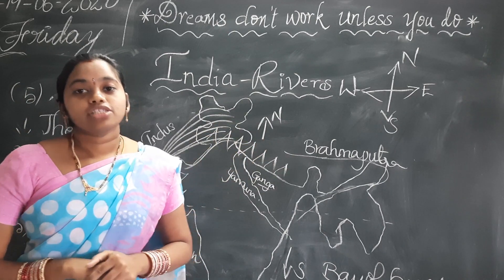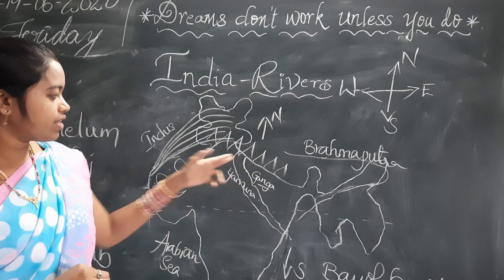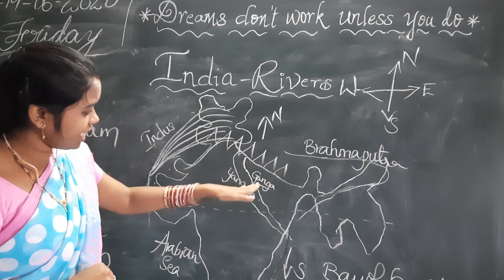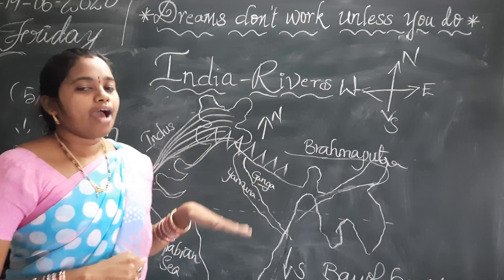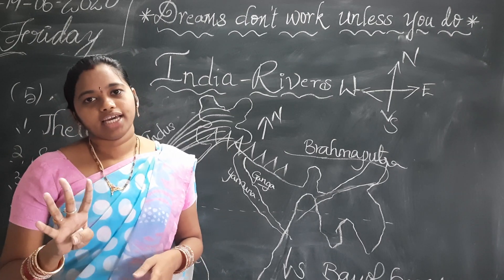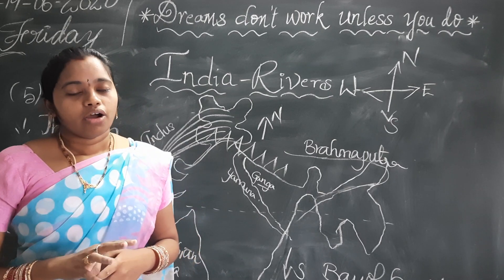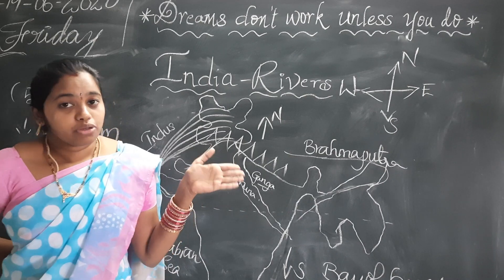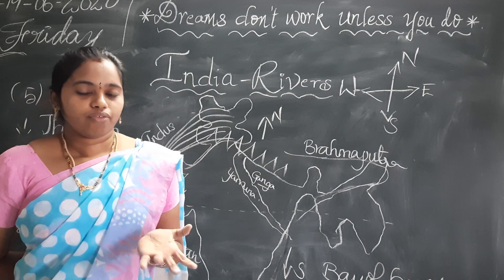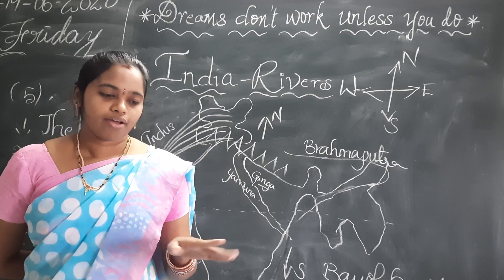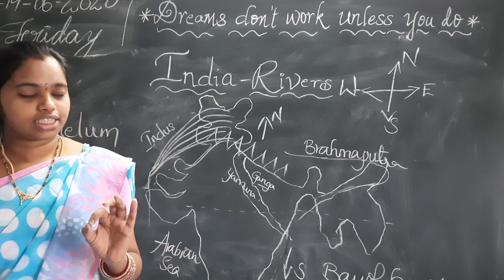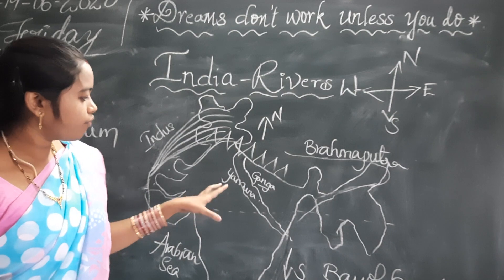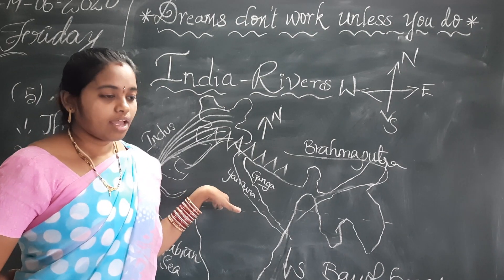Ganga, Yamuna, Brahmaputra, and Indus — these four rivers are called snowfed rivers. These snowfed rivers have water that remains the same throughout the year. Whether it is winter season or summer season, the water level still remains the same.